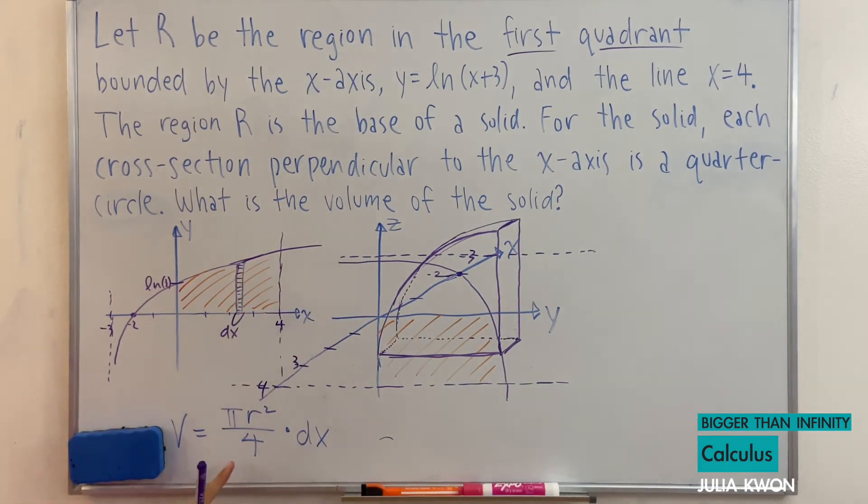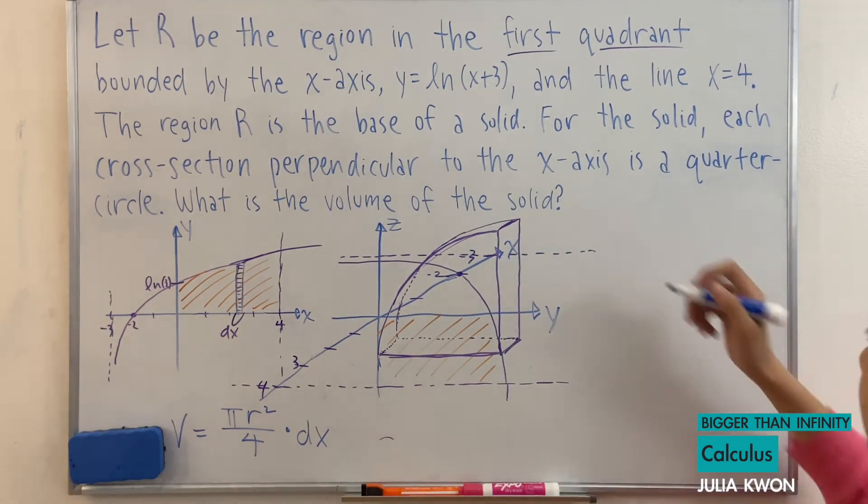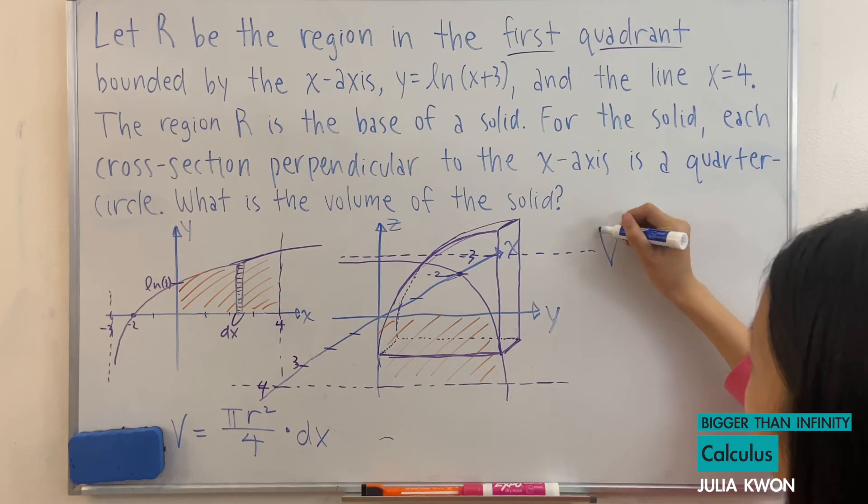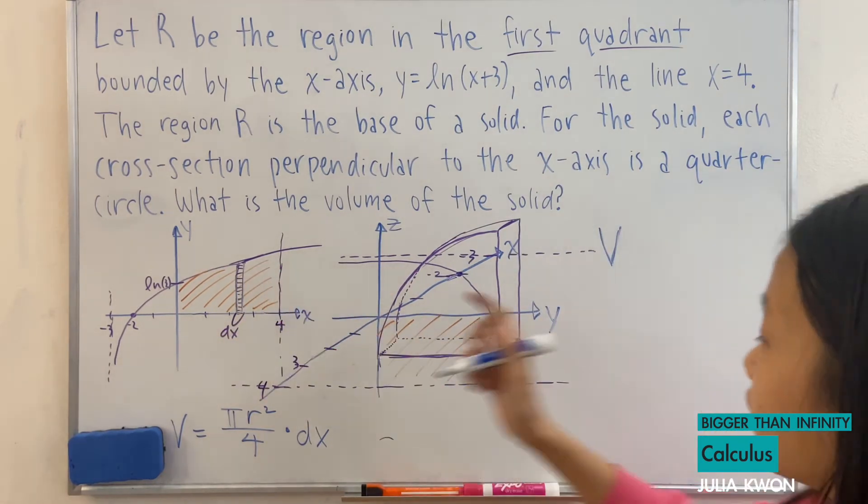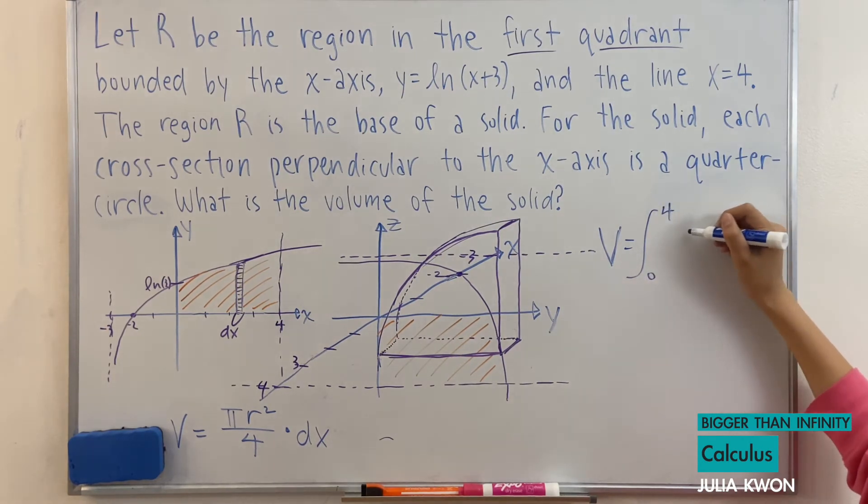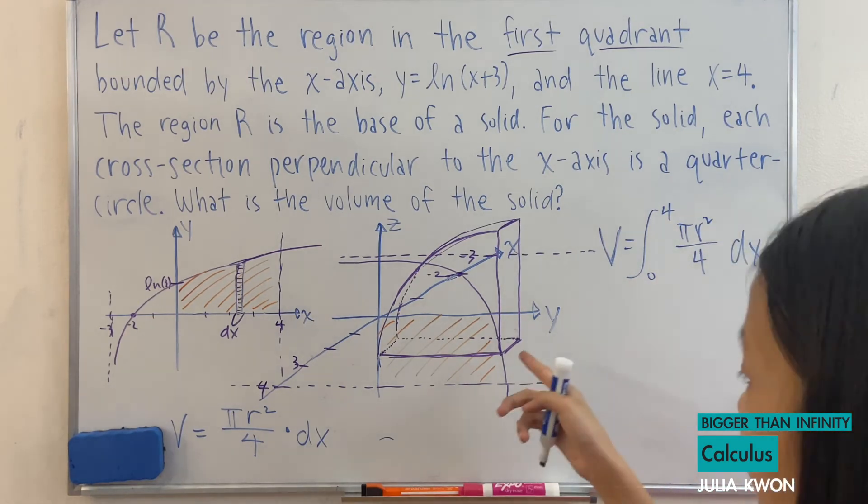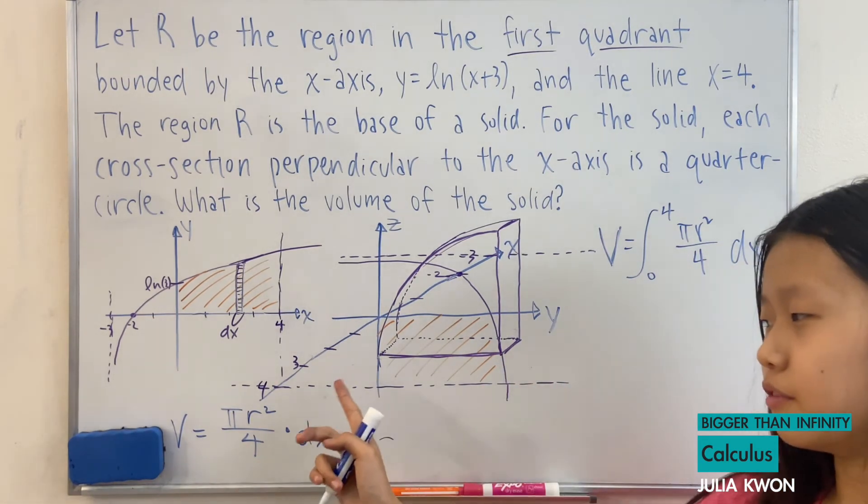And this is just the volume of this one cross-section. This is only the volume of this one quarter circle. And so if we were to find the volume of this whole thing, then we would have to take the integral from 0 to 4 of π r² divided by 4 dx. And what's the value of r?